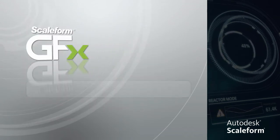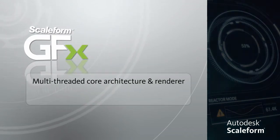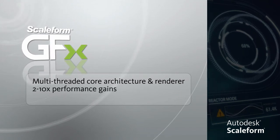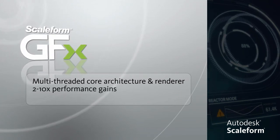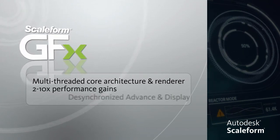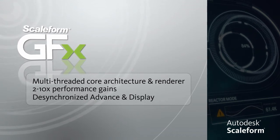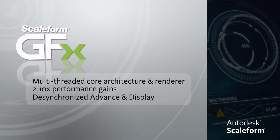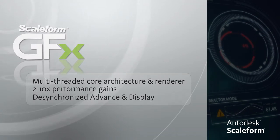Scaleform 4.0 was built from the ground up with a new multi-threaded core architecture and multi-threaded renderer, which gives you a 2 to 10x performance improvement over the previous version. The multi-threaded core desynchronizes advance and display, allowing them to execute at different rates on their own threads, which provides a 20% performance boost alone.